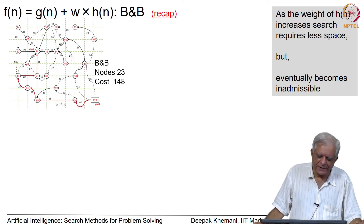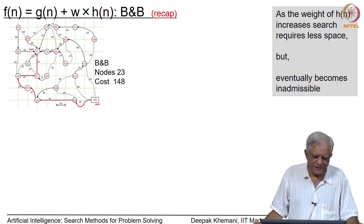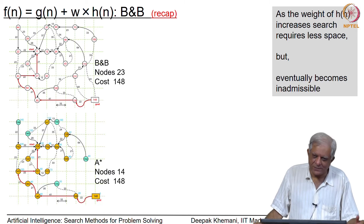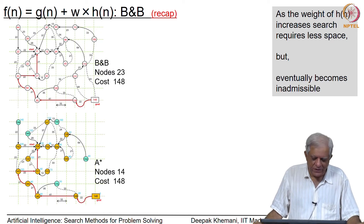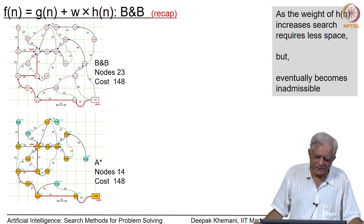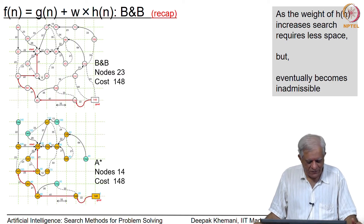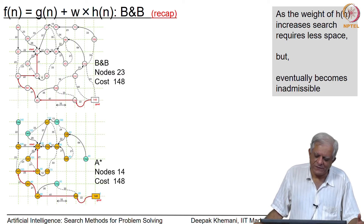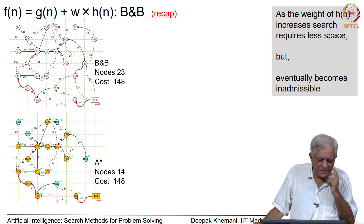Then we increase w to 1, which makes it A*. A* uses g(n) + h(n) and what we get is a slightly smaller graph that is explored. A* has explored only 14 of the 23 nodes, but it has found the optimal path — the same path that branch and bound found. We are not surprised because we have shown that A* is admissible.